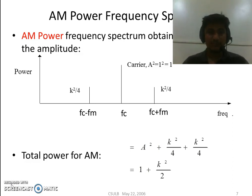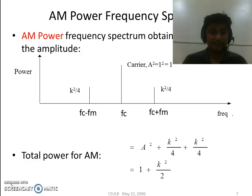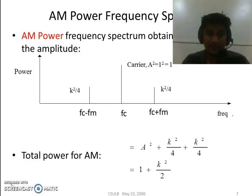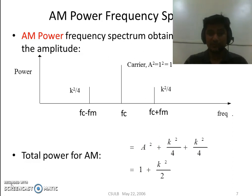To calculate power at each frequency, we square the magnitude. The power at the lower sideband frequency is ka²/4, the same power is available at the upper sideband frequency, and the power of the carrier is 1. Therefore, the total power is equal to 1 + ka²/2.